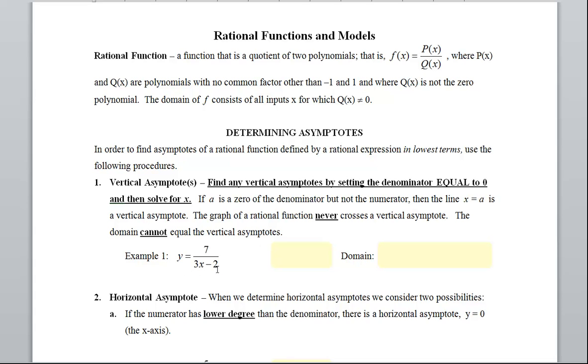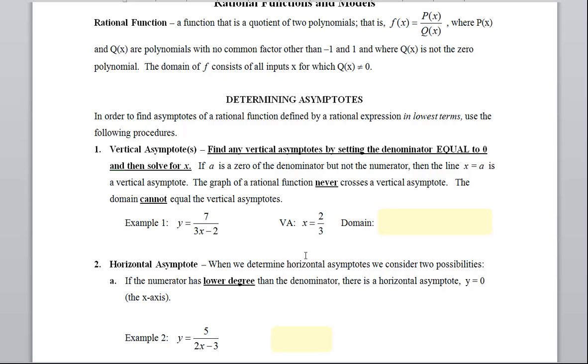So in this example, I'm looking for vertical asymptote. I'm going to set my denominator equal to zero. If I set it equal to zero, I add 2, divide by 3. My vertical asymptote is x equals two-thirds.